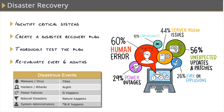So our number one defense against disastrous events is not to prevent them, because that's impossible, but to be prepared for them by having a plan and process in place, so when it does happen, we can get our systems online as soon as possible. That is a process known as disaster preparedness.